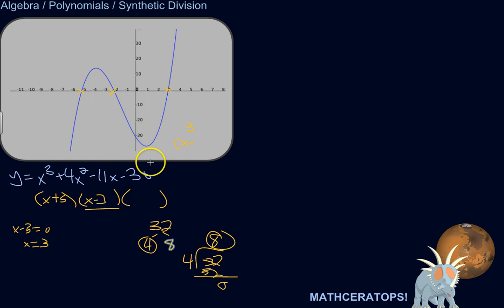So that's all we're doing here, except instead of 32, we've got this gigantic polynomial. Instead of 4, we've got a possible linear factor. So here's the method of synthetic division.